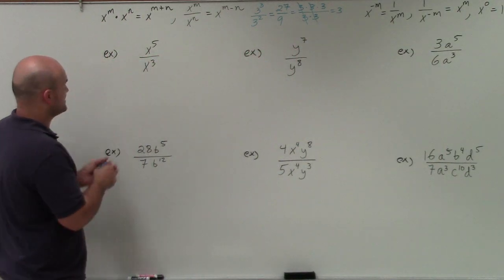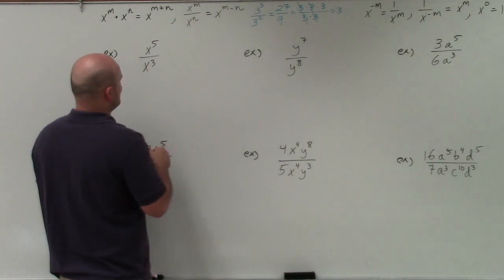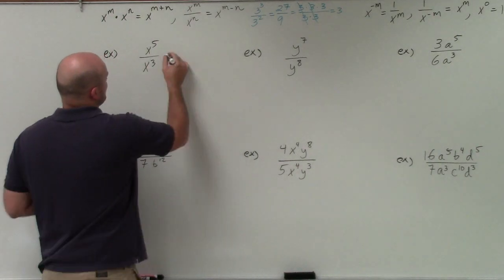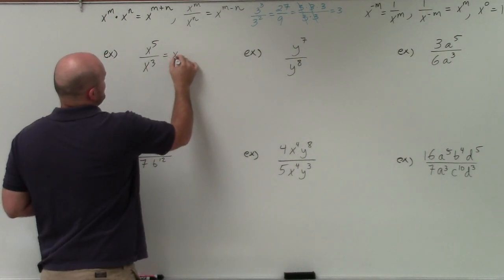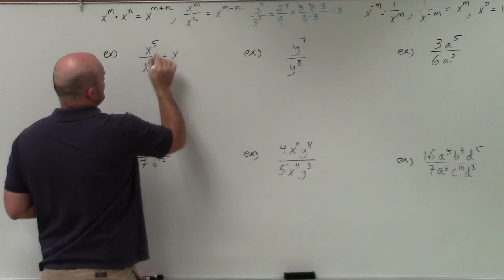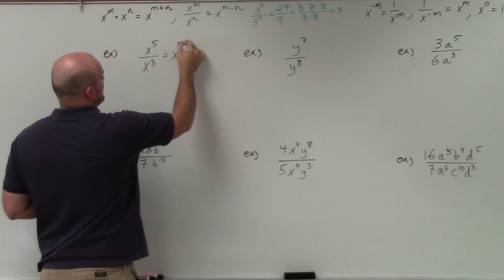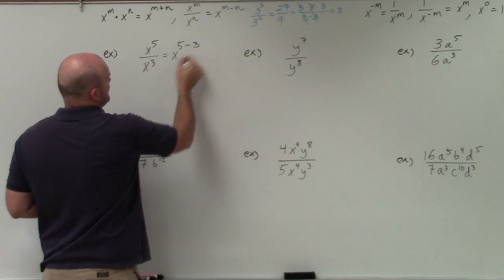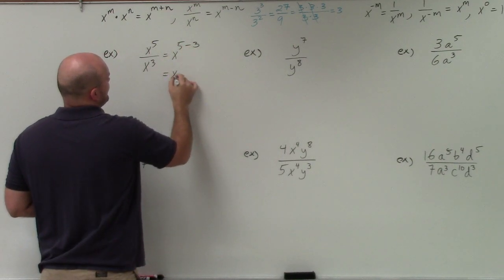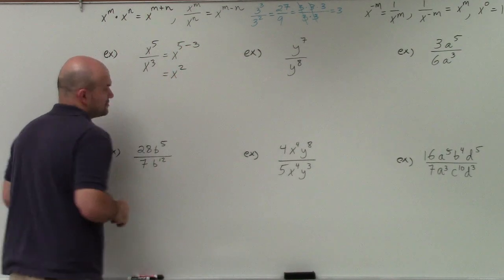So basically, in this example, all I simply need to do is subtract the power of the numerator by the power in the denominator. And that gives me x squared.